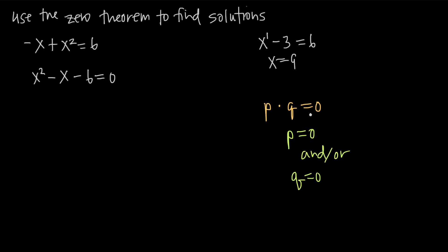That should make sense to us because if our equation is p times q equals zero, the only way this is going to be true is if p is zero — because then we would get zero times q equals zero, or just zero equals zero, and that would be a true equation. Or if q is equal to zero, because then we would get zero times p equals zero.